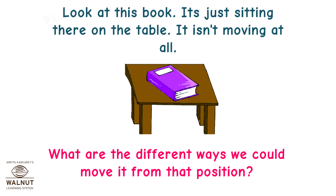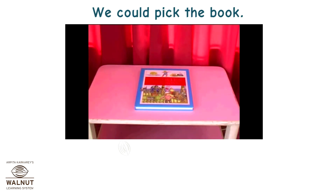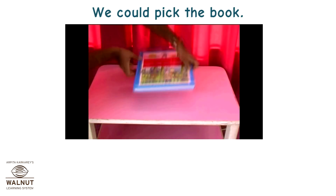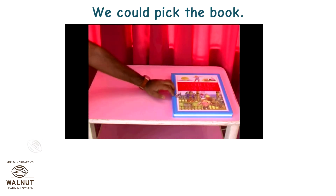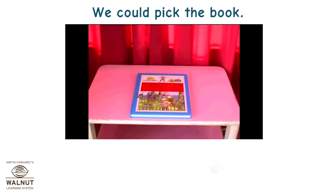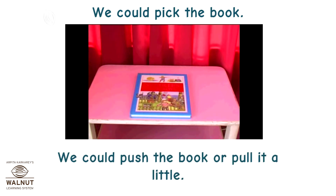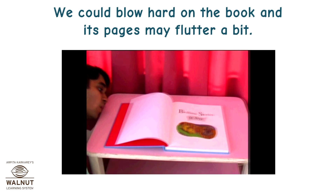Look at this book. It's just sitting there on the table. It isn't moving at all. What are the different ways we could move it from that position? We could pick the book, push it or pull it a little. We could blow hard on the book and its pages may flutter a bit.